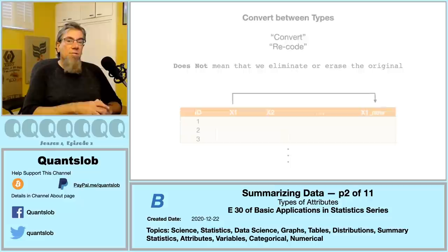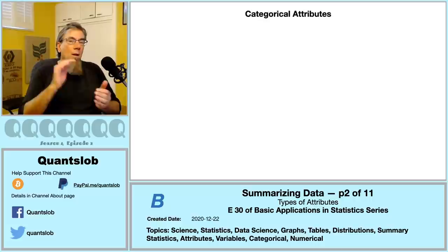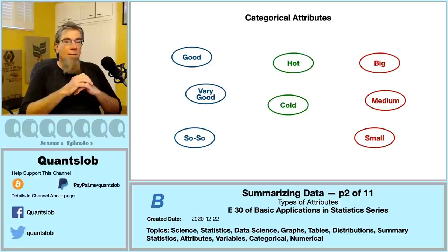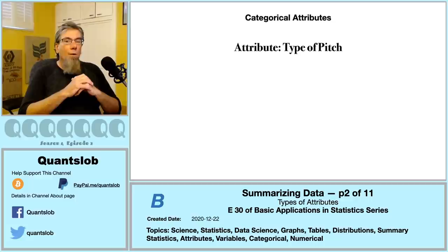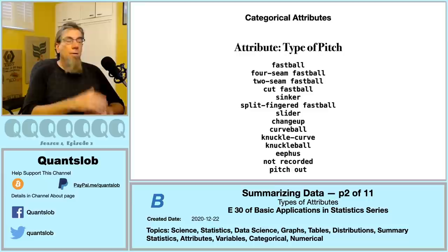How can we differentiate categorical and numerical variable types when looking at a dataset? A categorical attribute has values that are labels or categories — these labels are like names, which is why categorical attributes are often called nominative. They express a quality, which is why they're also called qualitative. For example, in our major league baseball pitch-by-pitch data, an attribute might be 'type of pitch,' and the domain is the set of all possible pitch type values in our dataset.